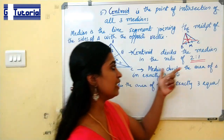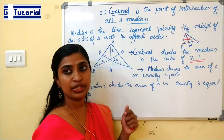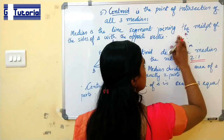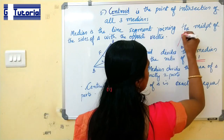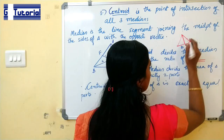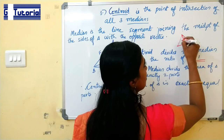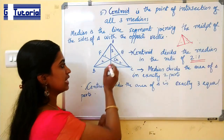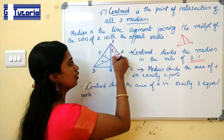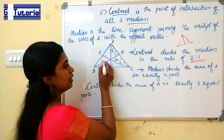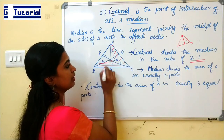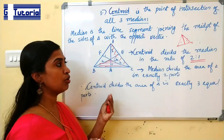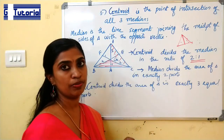A median divides the triangle into exactly two equal parts. But in the case of the centroid, it divides the triangle into three equal parts. So a median divides the triangle into two equal areas, while the centroid divides the triangle into three equal areas.